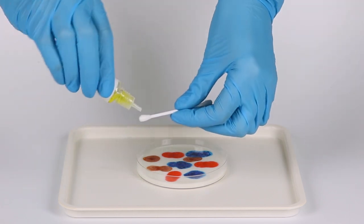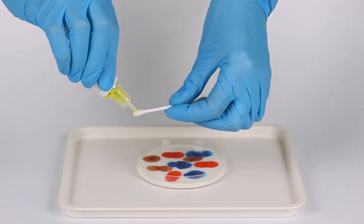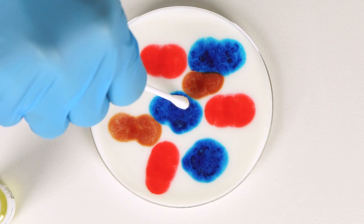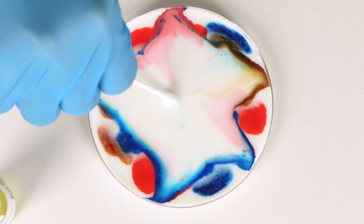Take a cotton swab and moisten it with liquid soap. Touch the swab to the center of the petri dish.